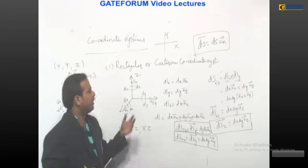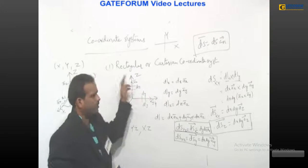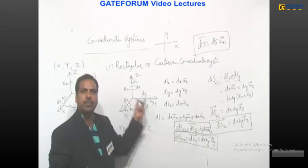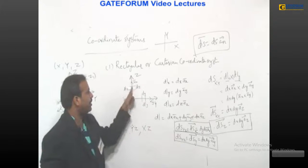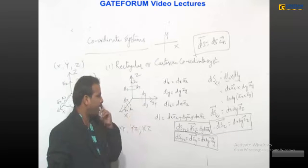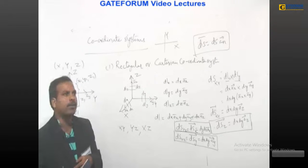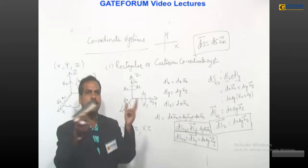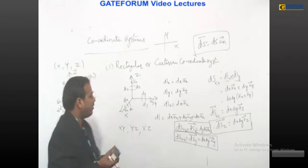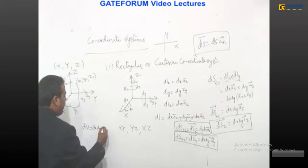When you consider the differential volume element for the rectangular coordinate system, it is the product of differential length elements along X, Y, and Z. So dx·ax̄ into dy·āy into dz·āz. If it is a dot product, the volume becomes zero because they are perpendicular. Similarly, if you take the cross product — our representation itself is three-dimensional — the differential volume is dx·dy·dz, and ax̄ cross āy cross āz.